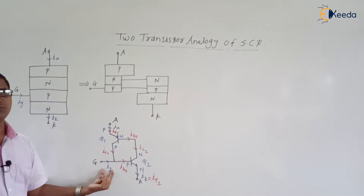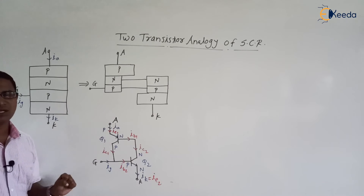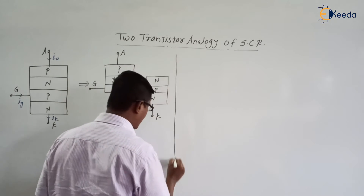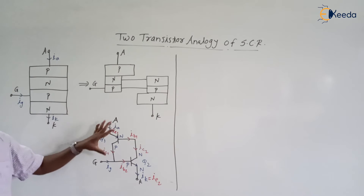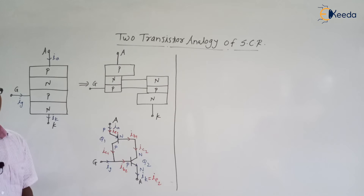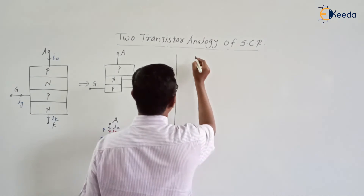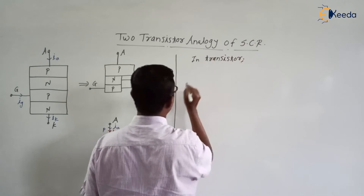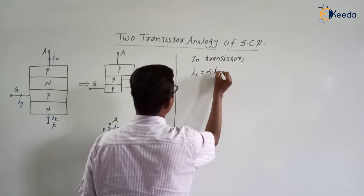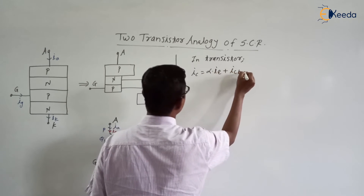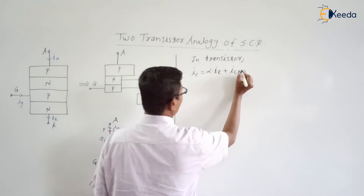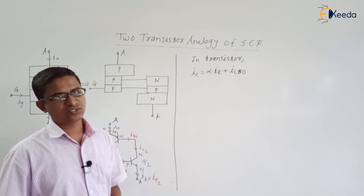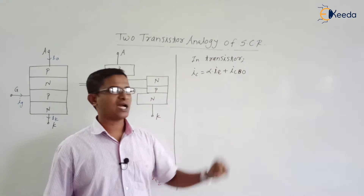Before circulation of the gate current, our SCR is in the off state. When SCR is in the off state, both the transistors will be in the off state. As we know, in a transistor during off state, IC is equal to alpha into IE plus ICBO. This expression is valid for all transistors during the off state. For transistor Q1, we can write IC1 is equal to alpha1 into IE1 plus ICBO1.